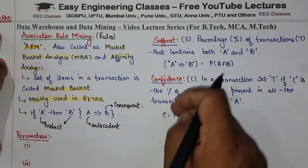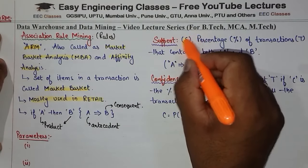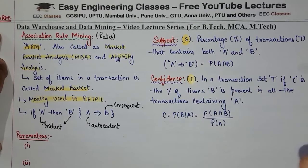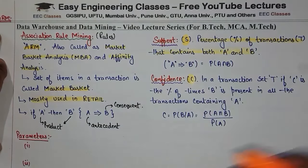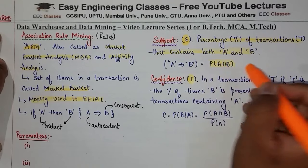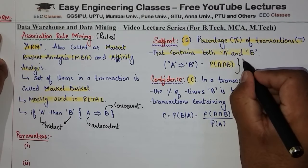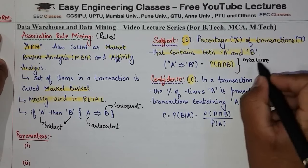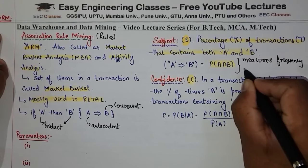Now, there are two main terms used in ARM: one is support (S) and another is confidence (C). Support is the percentage of transactions that contain both A and B. The formula is the probability of both A and B occurring together. It measures the frequency of an association between two items A and B.